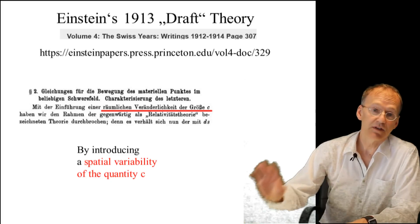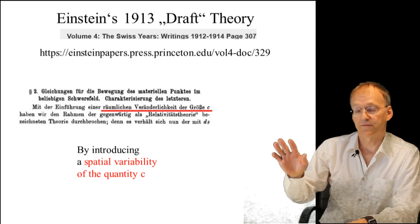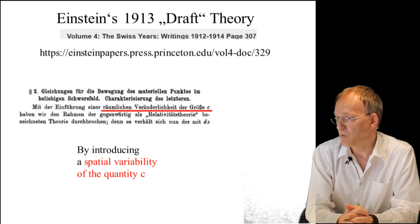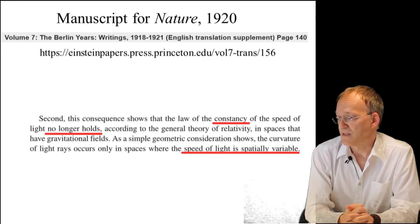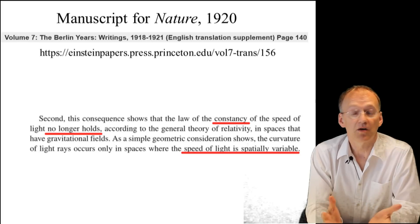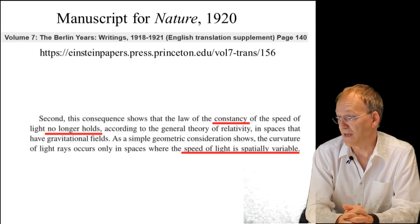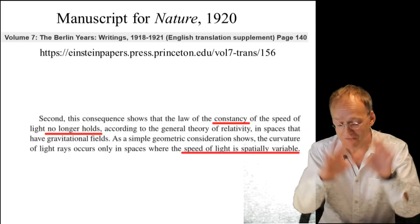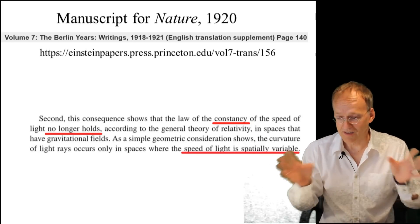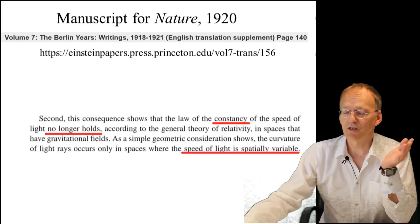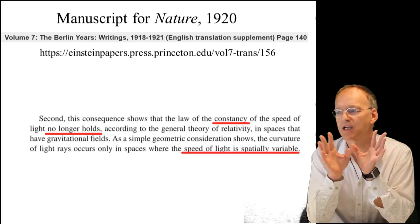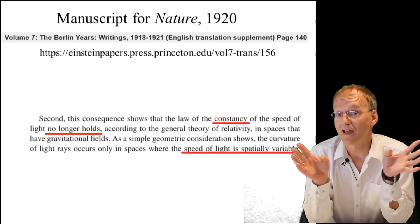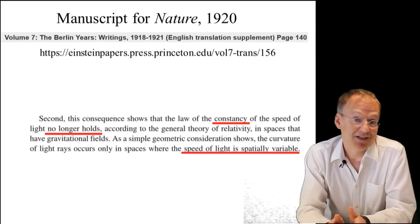Even in 1930, he talks about spatial variability of the quantity c, of the speed of light. And even later, when he favored a slightly different interpretation after he became famous in 1920, he still writes about the constancy of the speed of light - it no longer holds. The speed of light is spatially variable. So if you don't understand anything about physics and Einstein, you might expect that in an article about the variable speed of light you read something about Einstein.